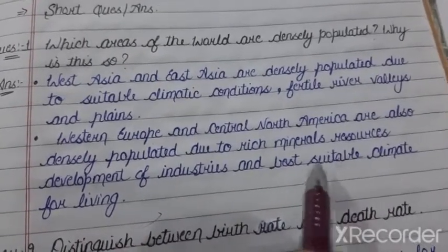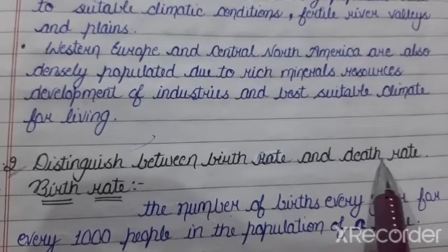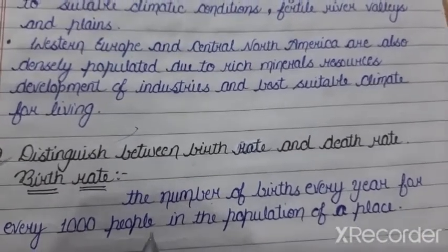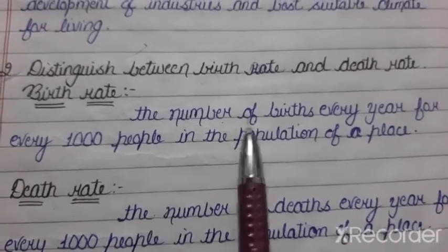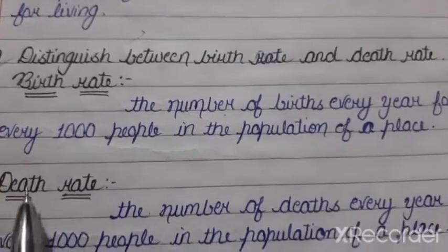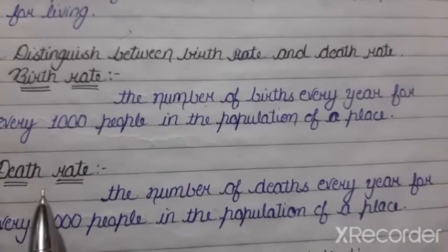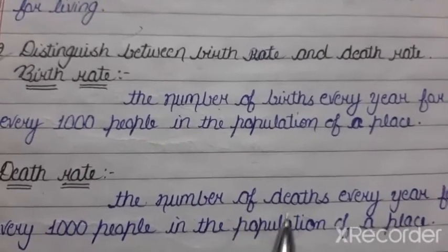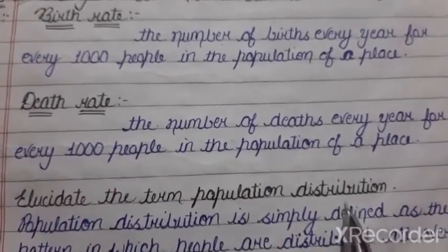Question two is: discuss the difference between birth rate and death rate. Birth rate is the number of births every year for every thousand people in the population of a place. Death rate refers to the number of deaths every year for every thousand people in the population of a place.